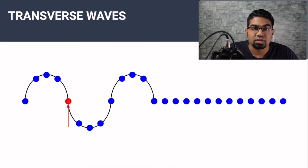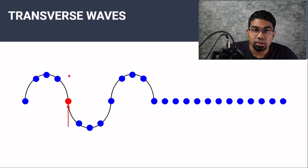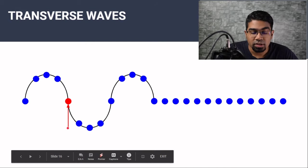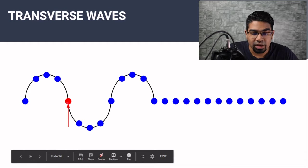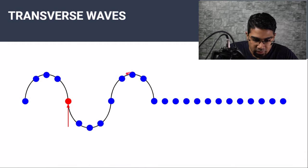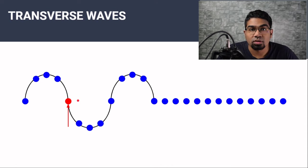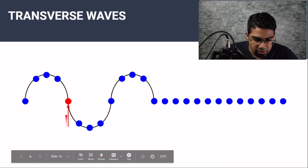And back to the same position. So at this point, we have seen the particle move upwards until a maximum point, go back to the equilibrium position, go down again to another maximum point, and then go back to equilibrium. At this stage, look at the shape of the wave. The particle is said to have made one complete oscillation — it's gone up, come down, gone down, and come up.